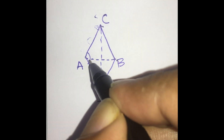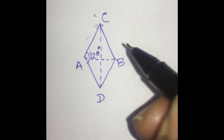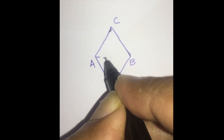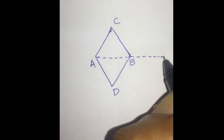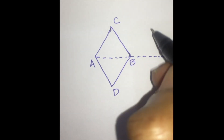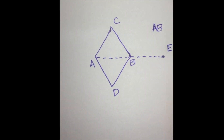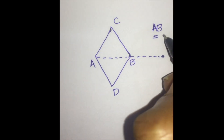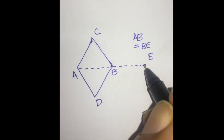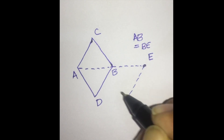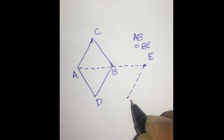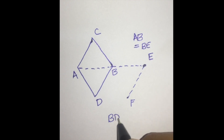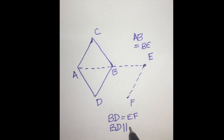The angle C-A-D measures 120 degrees and the angle A-C-B measures 60 degrees. Once the defect has been created in the form of a rhombus A-B-C-D, the short diagonal A-B is extended to a point E, where the distance A-B is equal to B-E. From point E, a parallel line is drawn to line B-D, equal in length to B-D, up to a point called F. So B-D equals E-F in length, and B-D is parallel to line E-F.